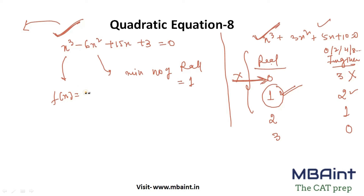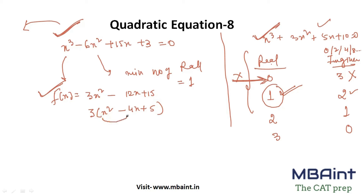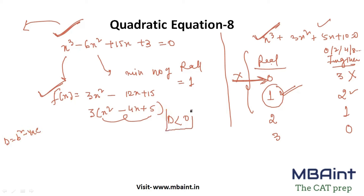Differentiating x³ − 6x² + 15x + 3, we get 3x² − 12x + 15. Taking 3 as common gives us x² − 4x + 5. Now I need to find whether this expression is positive or negative. I can check the discriminant D = b² − 4ac. Here D is less than 0, so the roots are imaginary.